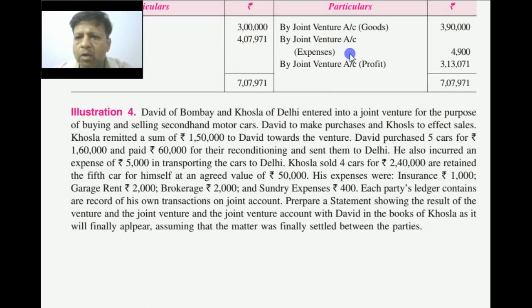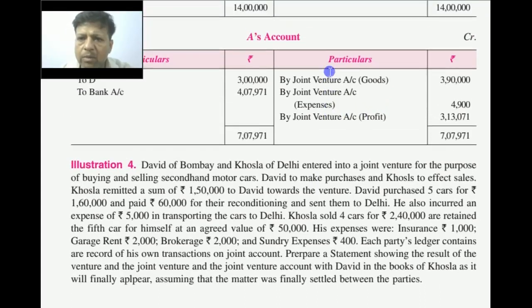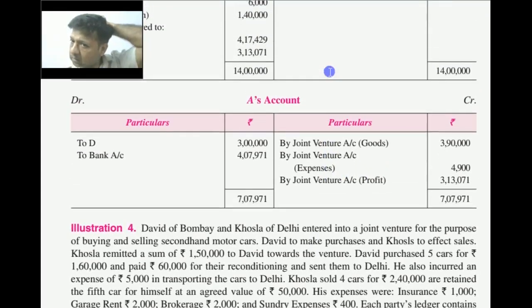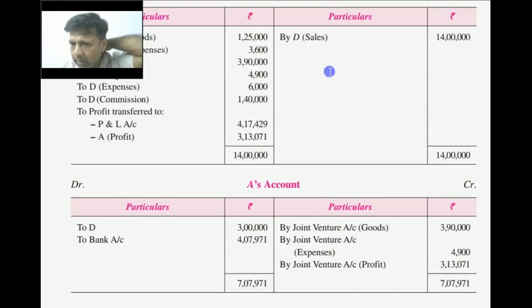If you want, you can also open D's account. D is an outsider who deals with the joint venture — amounts received from D go to the bank and commission or expenses paid to D are shown on the credit side.